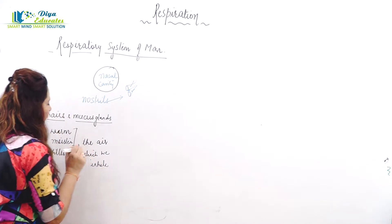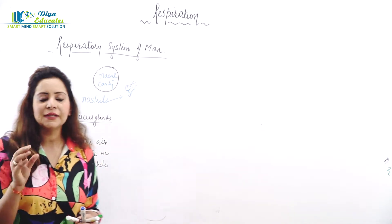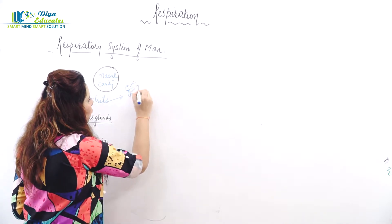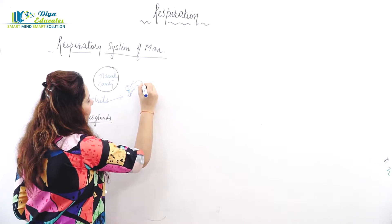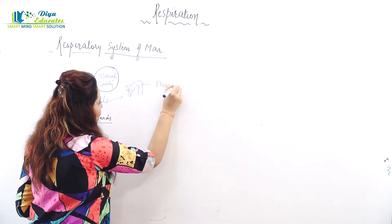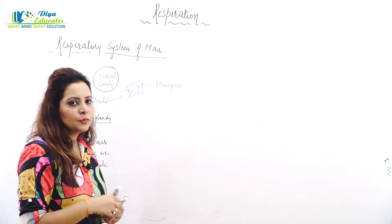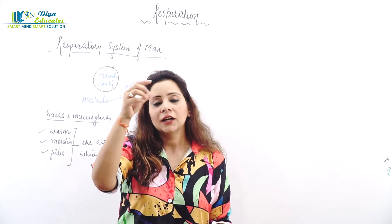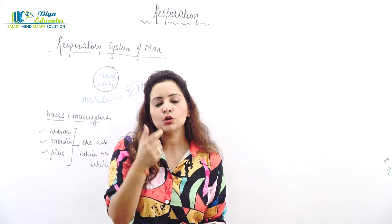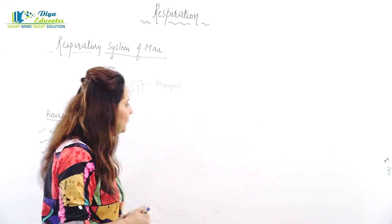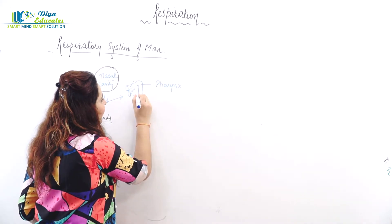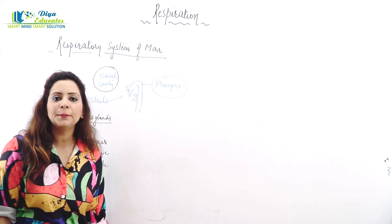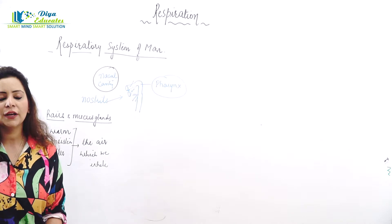So this work is done by hairs and mucus glands present in the nasal cavity. Then this nasal cavity leads into a pipe which is called the pharynx. The nose and mouth are connected because they both lead into a common pipe — called the pharynx, or a common tube.